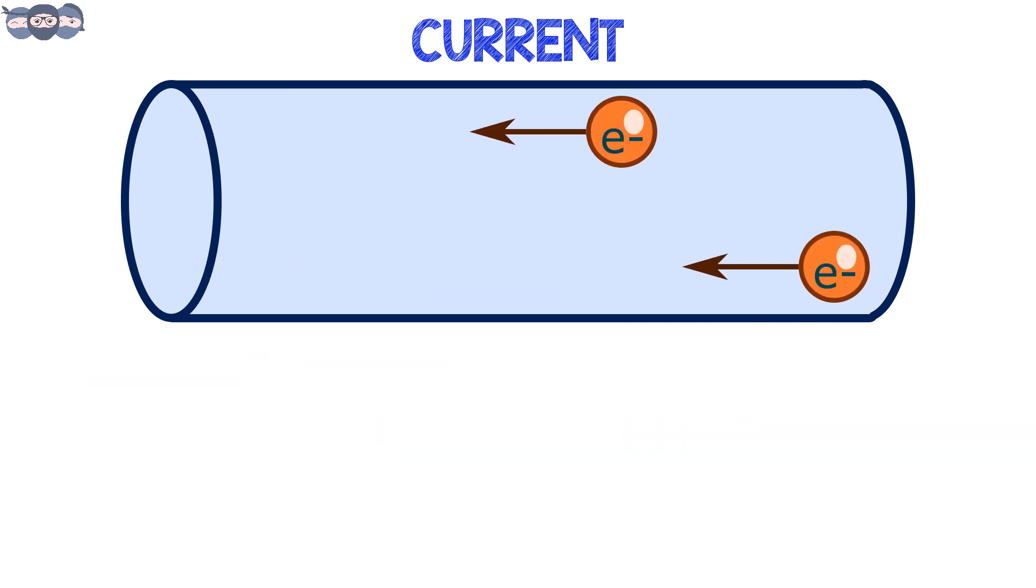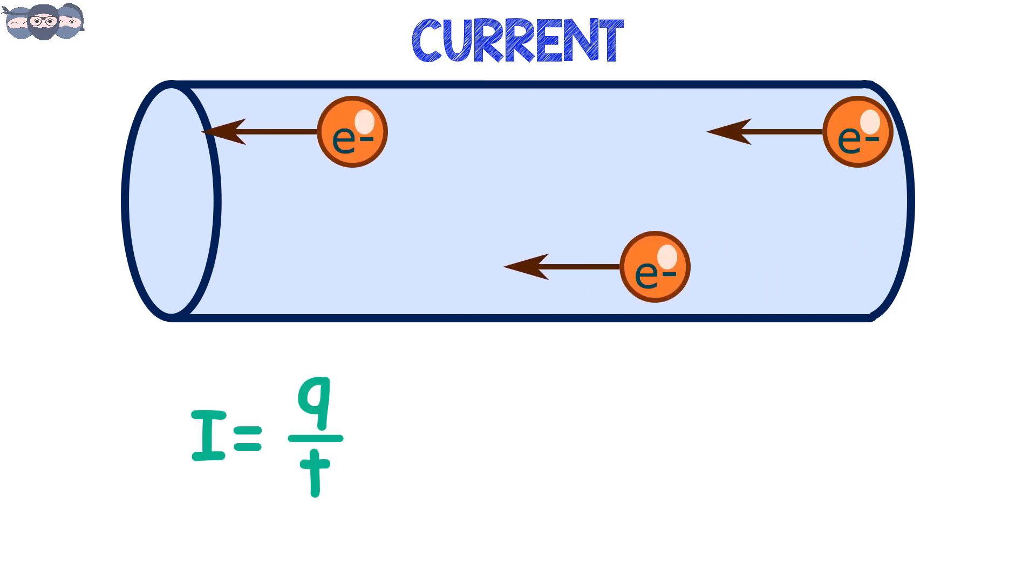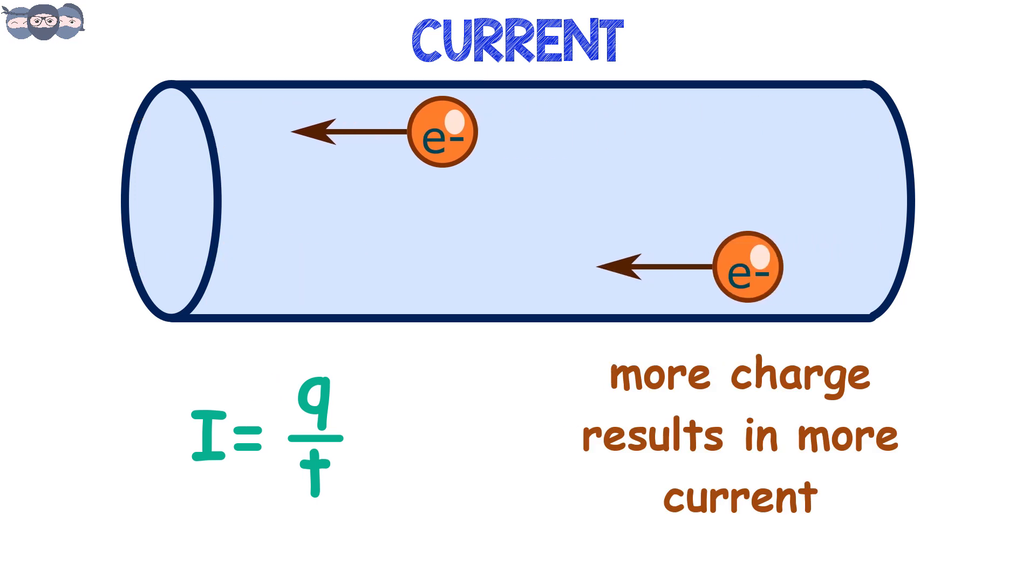Mathematically, it is written as the ratio of Q and T. From the equation, we can infer that the more the charge, the more current would flow for the same fixed time.